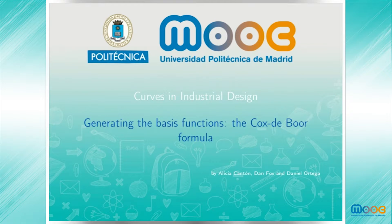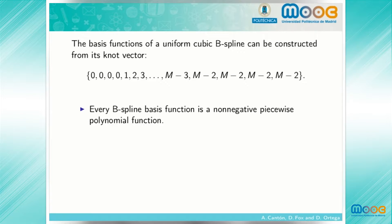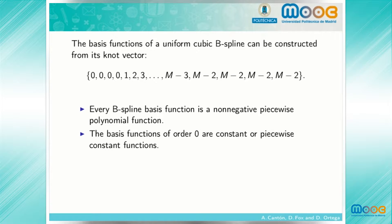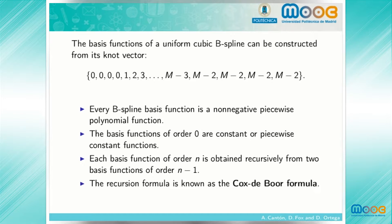Curves in industrial design: generating the basis functions, the Cox-de Boor formula. The basis functions of a uniform cubic B-spline can be constructed from its knot vector. Every B-spline basis function is a non-negative piecewise polynomial function. The basis functions of order 0 are constant or piecewise constant functions. Each basis function of order n is obtained recursively from two basis functions of order n minus 1. The recursion formula is known as the Cox-de Boor formula.